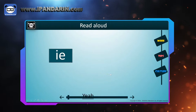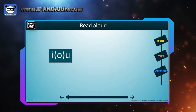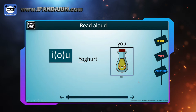IE — like 'ye' in 'year'. And in Chinese, 叶 (yè), which means leaf. IAO — like 'you' in 'yogurt'. And in Chinese, 油 (yóu), which means oil.